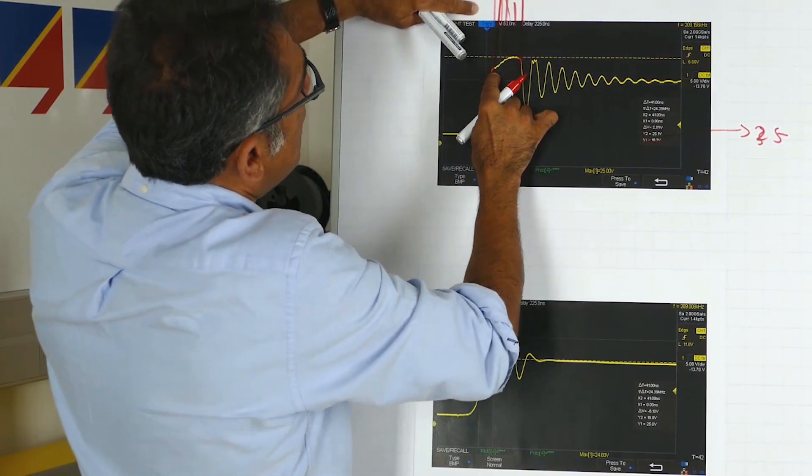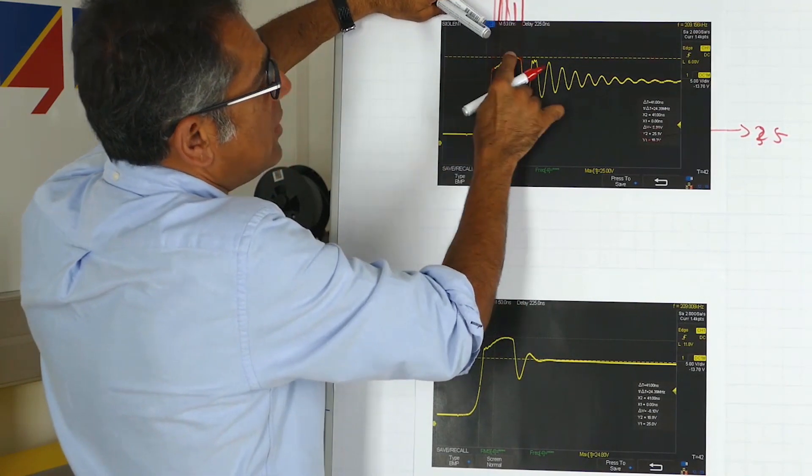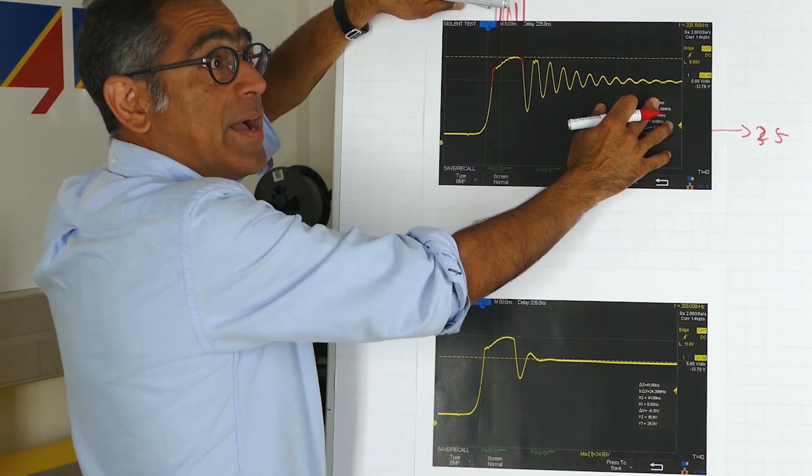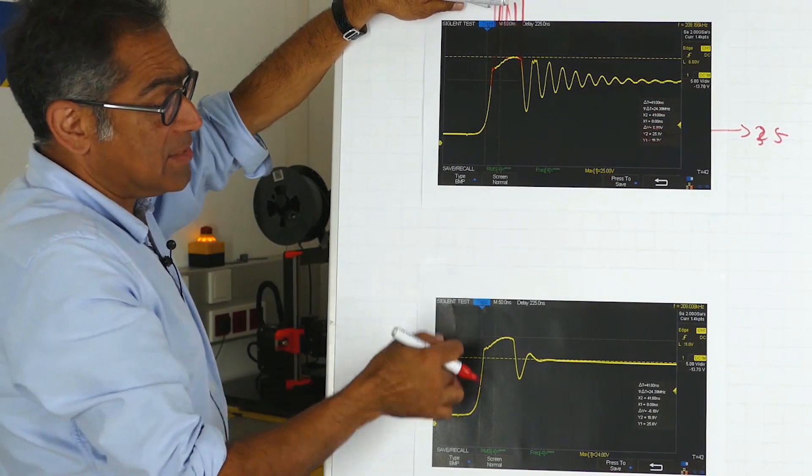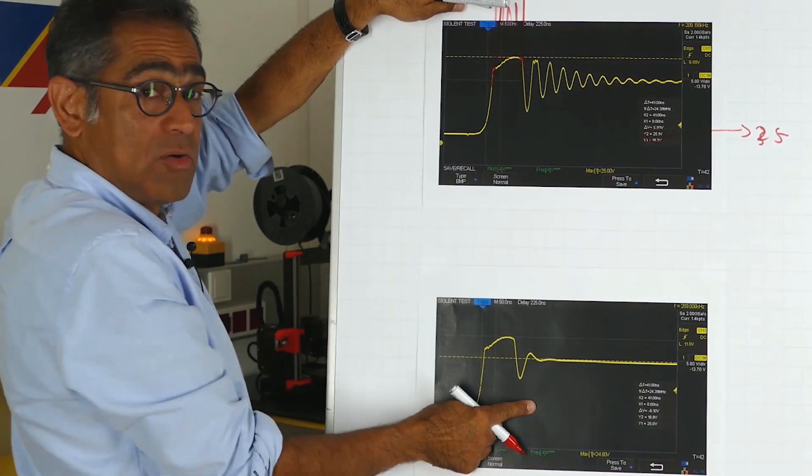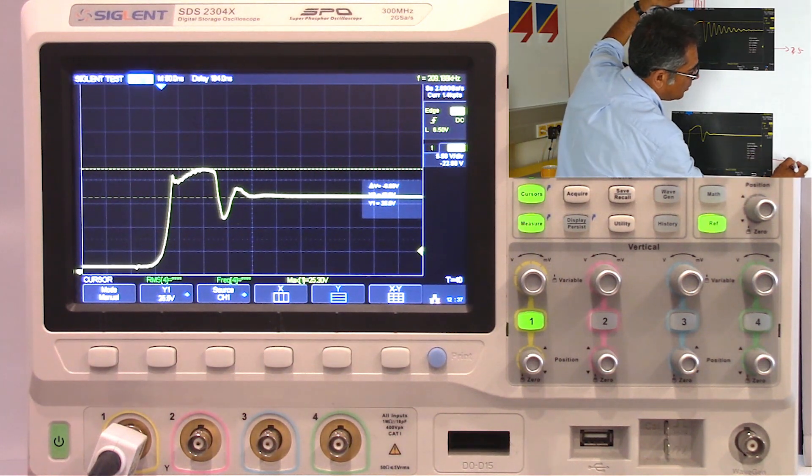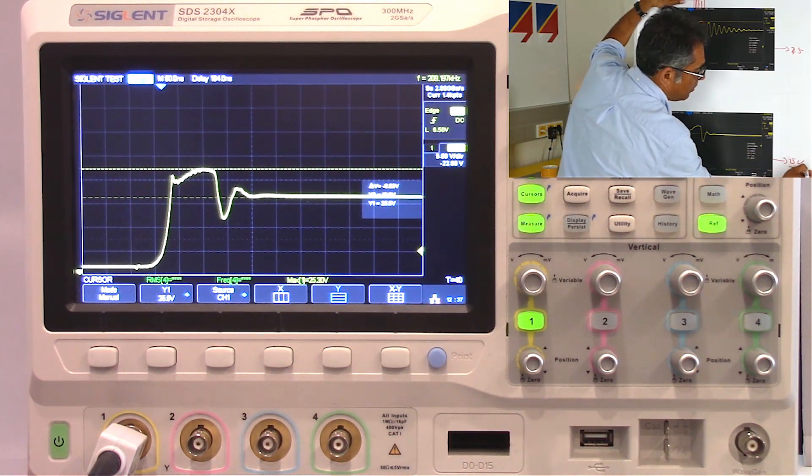You can see that at 25 volts the clamp turns on, and then the ringing continues. If I add an RC snubber also, the ringing also disappears whilst the clamp is still clamping at 25 volts.